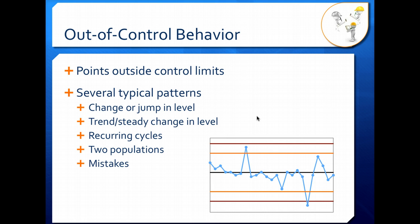We have several typical patterns that indicate out of control behavior. Those are: change or jump in level, you have a trend or a steady change in the level so your process average is changing over time, you have recurring cycles, you can have two populations on your control chart, or you can just have mistakes. Everybody makes them. So let's take a look at what these patterns look like.